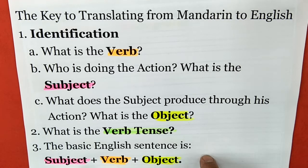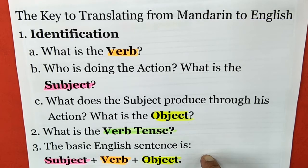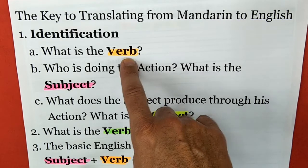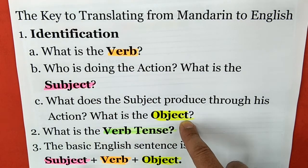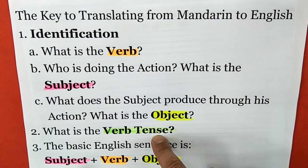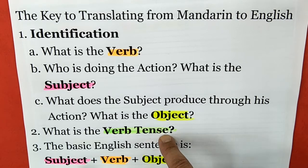Number three: remember the basic English sentence is a subject, a verb, and an object. I used three colors — verb orange, subject pink, and object yellow. Then I went through and found the verb tense and colored that green. The key words tell you what the verb tense is.